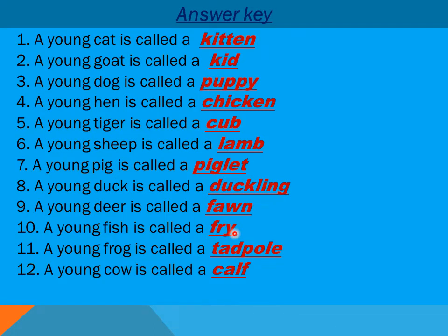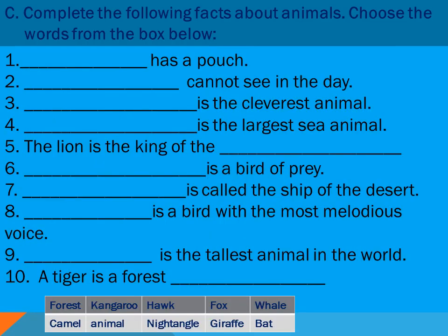A young fish is called a fry. A young frog is called a tadpole. And a young cow is called a calf. Now this is the final exercise for you — complete the following facts about animals using words from the box below.